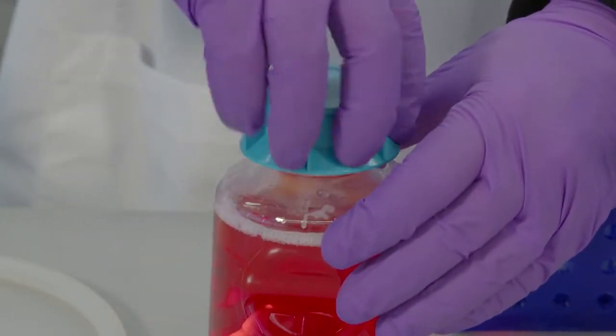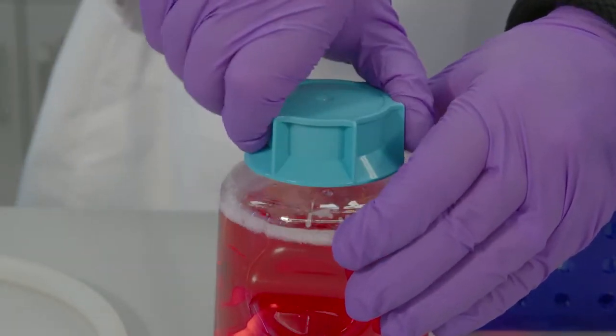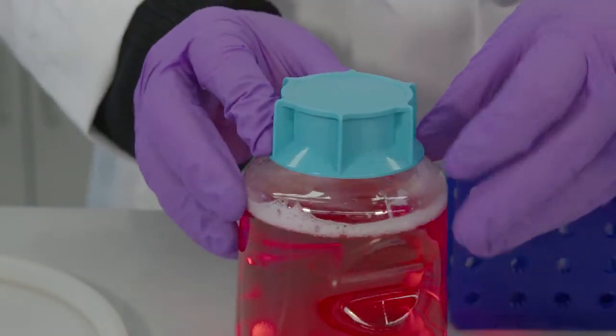For the SteriCup E system, screw the cap onto the receiver bottle until it clicks into a sealed position.